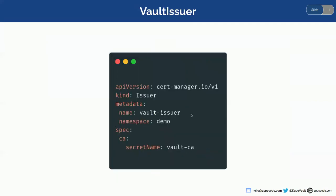Here is the Vault issuer file. I've provided the name and namespace for the Vault issuer, and for this Vault issuer I'll need to create a CA secret which I have already created. So let's go ahead and deploy our TLS Vault server.